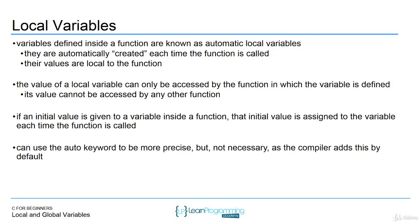You can use the auto keyword before the data type, but it's not necessary. The compiler will add it by default if you don't include it, but including it just makes it a little more explicit. That's why it's called an automatic local variable. There is a keyword named auto in C, but you don't need to provide it — it's provided by default — and that's why you don't see it in most examples where variables are defined inside of a function.